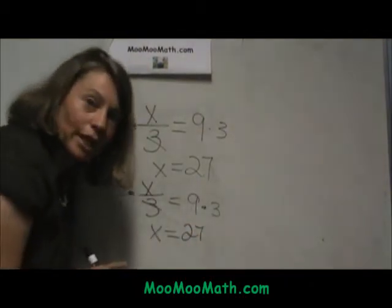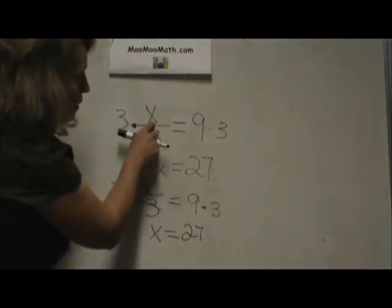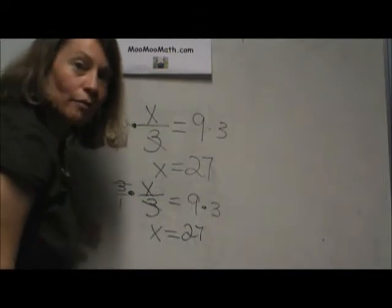This is an equation so I can always check my answer. Let's go back and plug it in. 27 divided by 3 was equal to 9, which was my original problem.